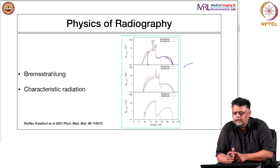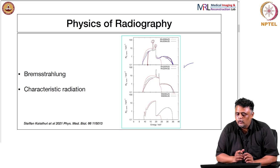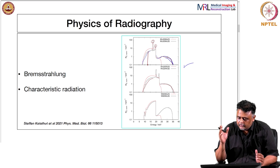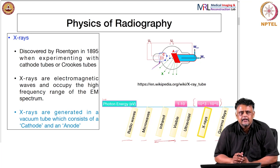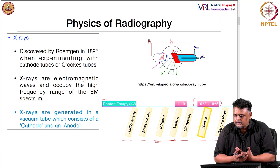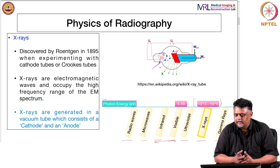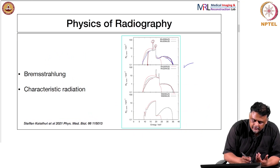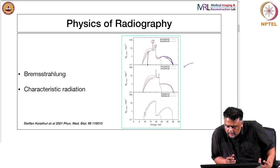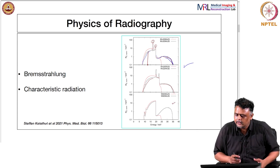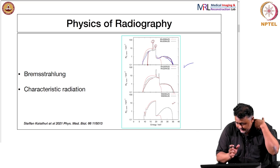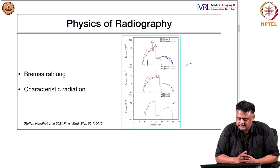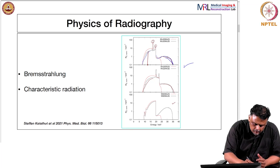The peaks are called characteristic because they are unique to every material — specifically the target material. For instance, the spectrum shown corresponds to molybdenum and tungsten targets. The characteristic peaks differ depending on the target material, such as tungsten or other high-Z materials. Both bremsstrahlung and characteristic radiation fall under what is called radiative transfer.